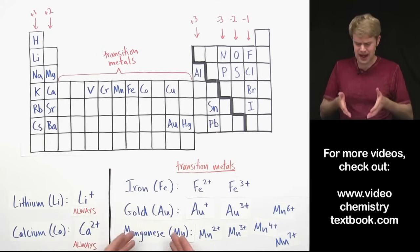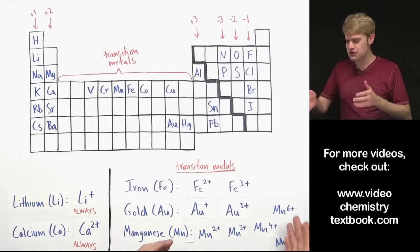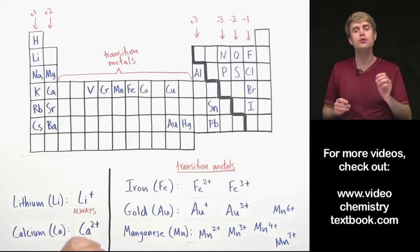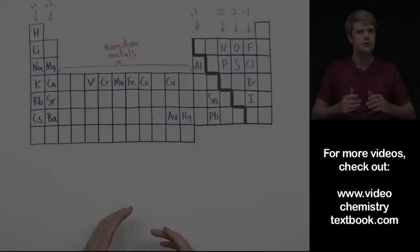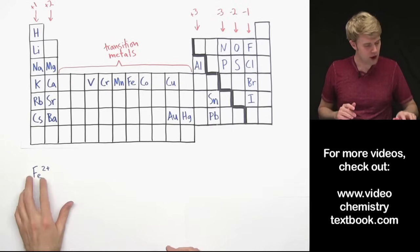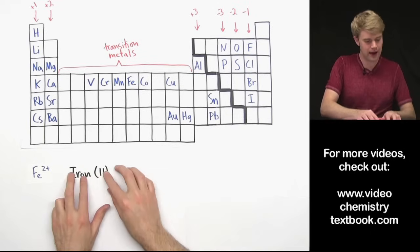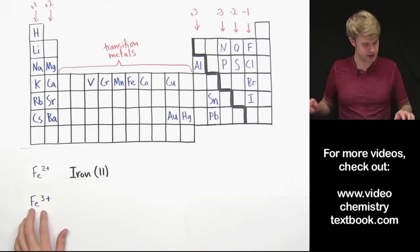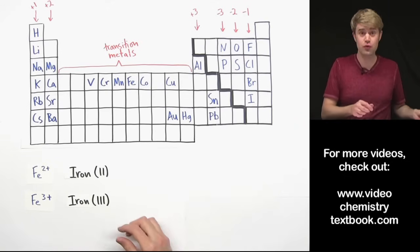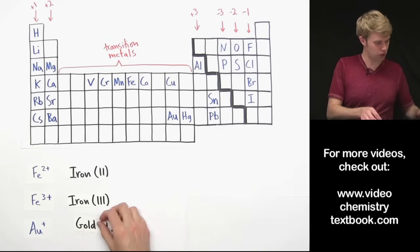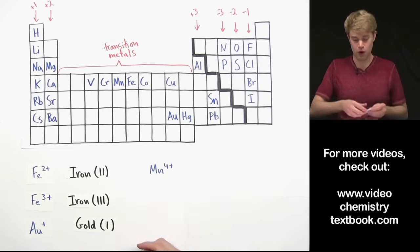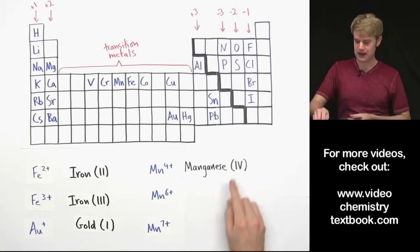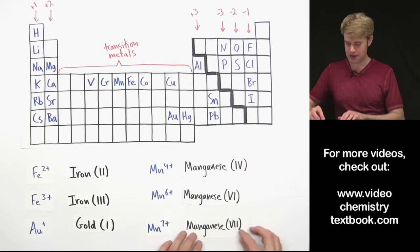So when we have these elements that can make different types of ions, how do we tell them apart? Well, we have to use a naming system that uses Roman numerals. I'll show you what I mean. So using this Roman numeral notation, we call the Fe2+ ion, we call that iron(II), with a 2 in Roman numerals in parentheses. Iron 3+ is iron(III), gold 1+ is gold(I), and manganese, for example, 4+, 6+, 7+, are written as manganese(IV), manganese(VI), and manganese(VII).